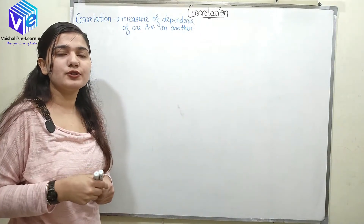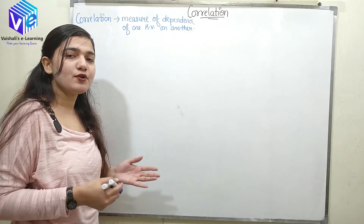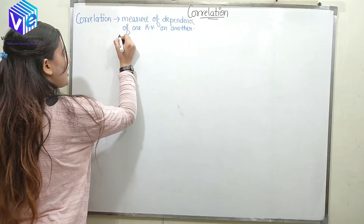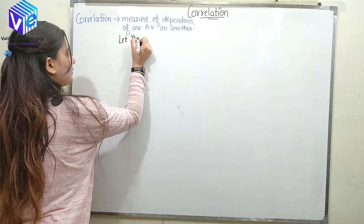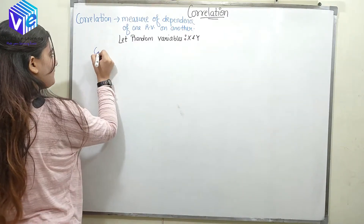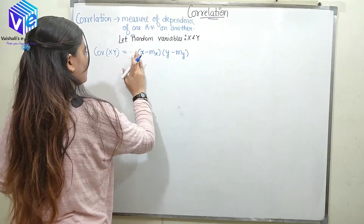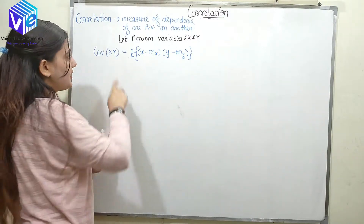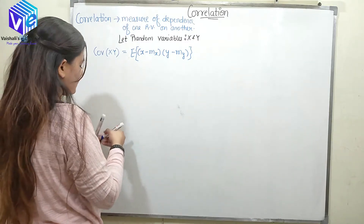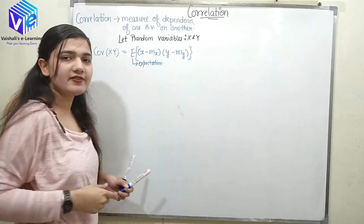Correlation can be measured using the formula of covariance. Covariance gives me the dependence of one random variable on the second random variable, or how two random variables are related. So let's suppose I have two random variables x and y. The covariance of x and y is given by E — the expectation — of (x minus m_x) multiplied by (y minus m_y).